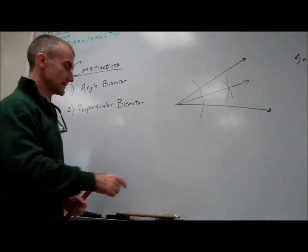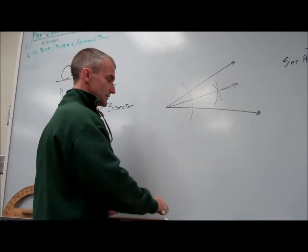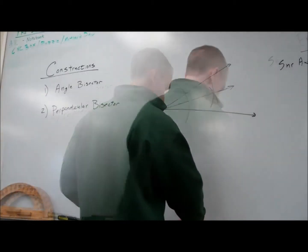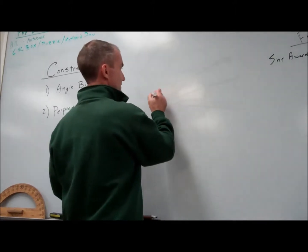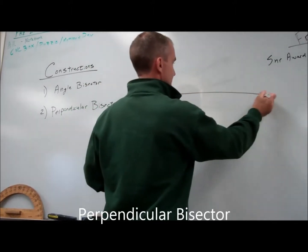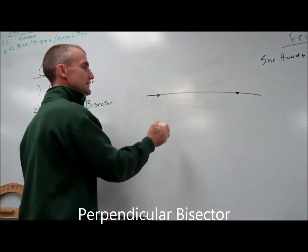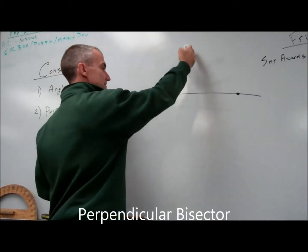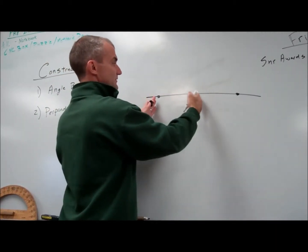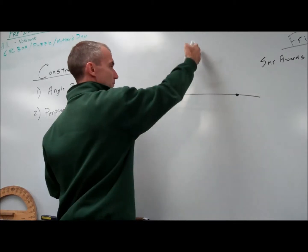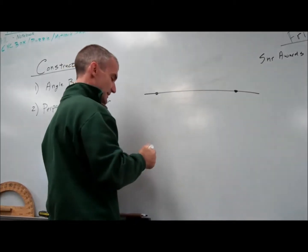The second construction I'm going to go over is a perpendicular bisector. If I have a given line segment - meaning a starting point and an ending point - and I want to find a place halfway in between that's going to bisect it, so cut it into two equal parts, the perpendicular will form an exact right angle.